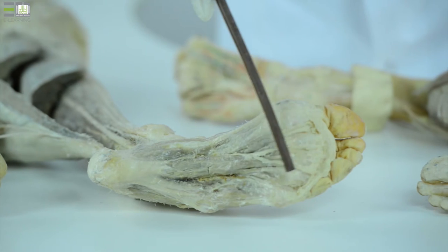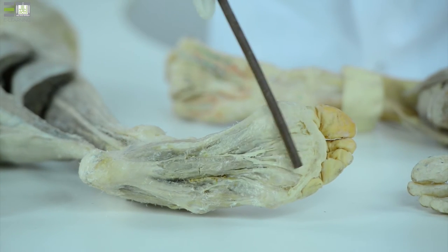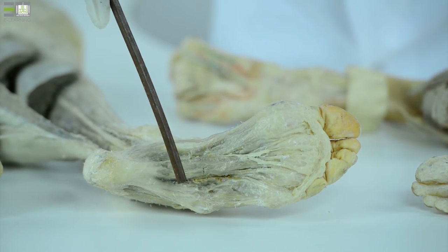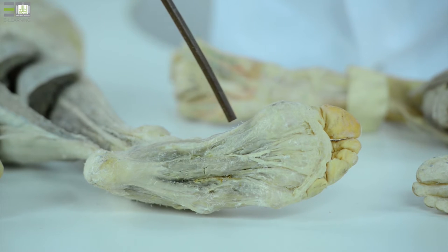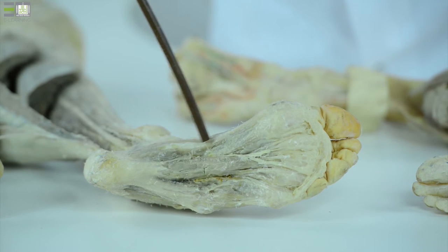If we remove the plantar aponeurosis, we can look to the first layer of the plantar surface of the foot. There are three muscles, two flexors, medial and lateral—sorry, two abductors, medial and lateral.